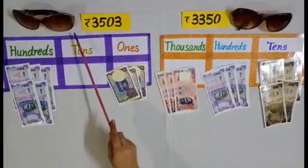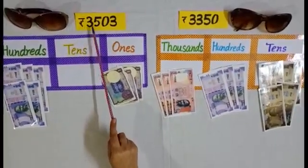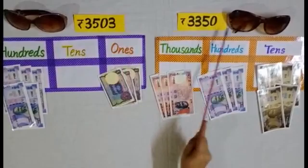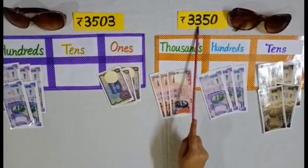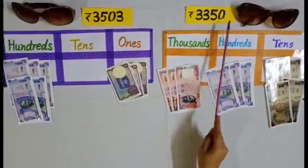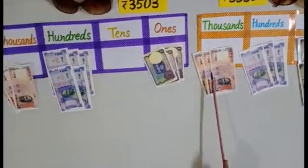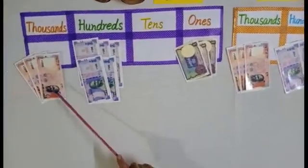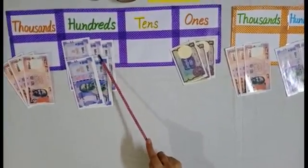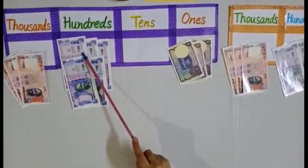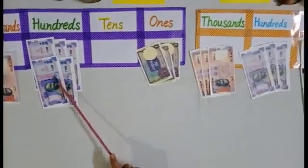The price of these goggles is 3,503 rupees and this goggle is 3,350 rupees. Both sides we have 3,000 rupees. Here we have 100, 200, 300, 400 and 500 rupees.